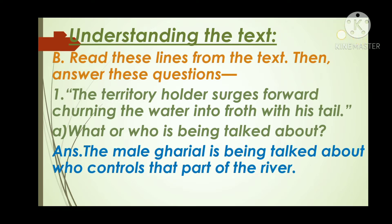Read these lines from the text, then answer these questions. The territory holder surges forward, churning the water into froth with his tail. This line has been taken from the text, and based on this line we have three questions. Question A: What or who is being talked about? The answer is the male gharyal is being talked about, who controls that part of the river.